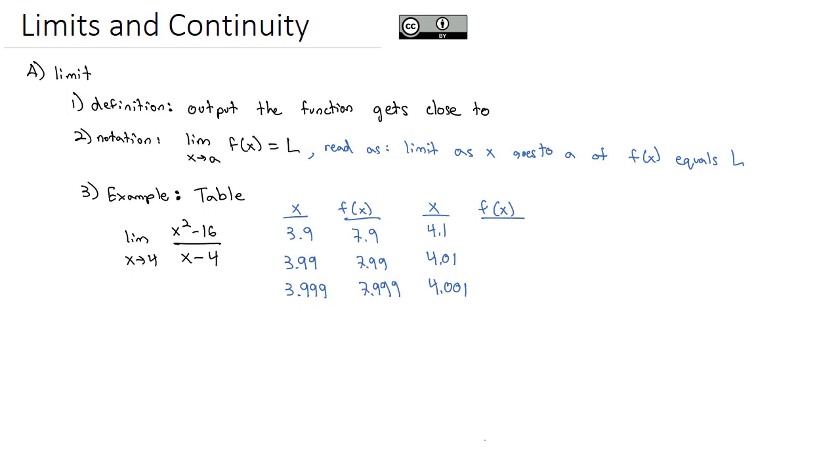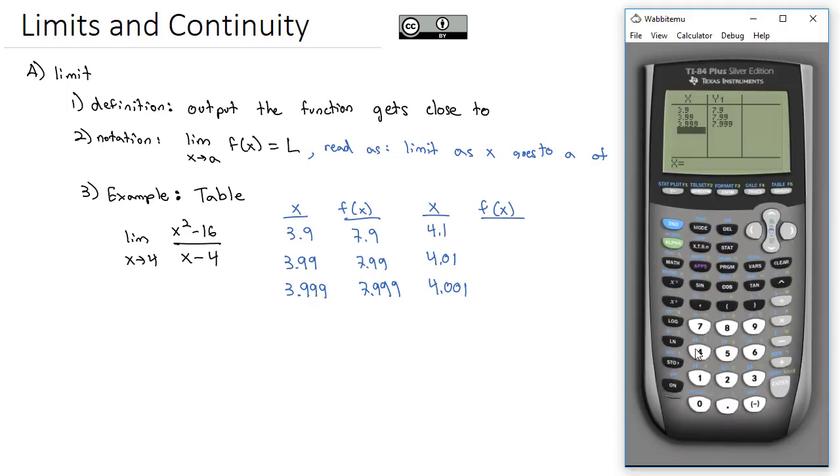That looks like it's getting closer and closer to a value, but let's look at what's happening on the other side. The other side is 4.1, 4.01, and 4.001. My outputs are 8.1, 8.01, and 8.001.